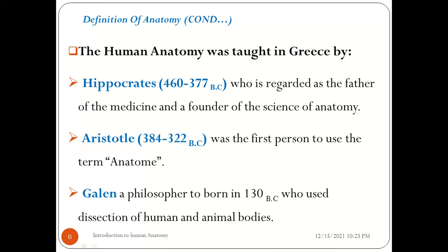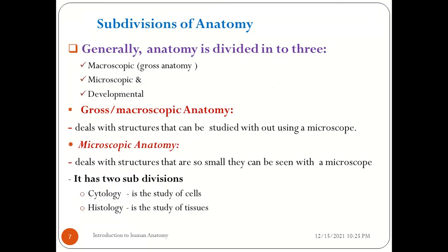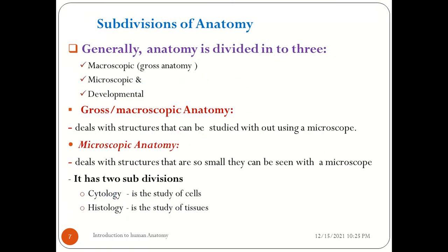Now we move on to the subdivision of anatomy. Generally, anatomy is divided into three branches: macroscopic anatomy, microscopic anatomy, and developmental anatomy. Macroscopic anatomy is the field that studies the gross structure of the human body.